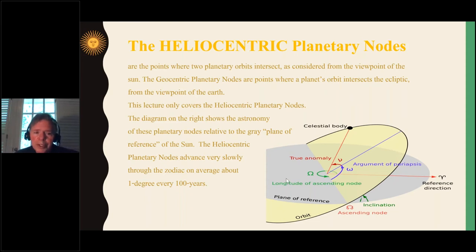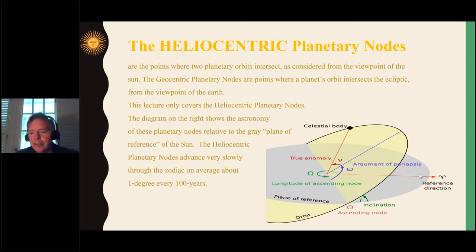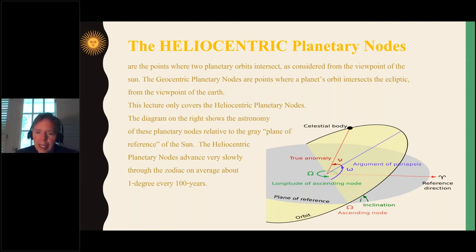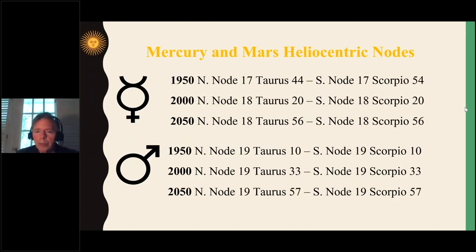These points move or advance very slowly through the zodiac — only about one degree every hundred years, sometimes even a little less for some of them. So when you memorize these heliocentric planetary nodes, it's pretty easy because they don't move very fast at all. However, if you're doing historical work, you have to take into account that if you're looking at someone's birth in the 1600s or 1700s, the node would have been in an earlier degree than for the 20th or 21st century.